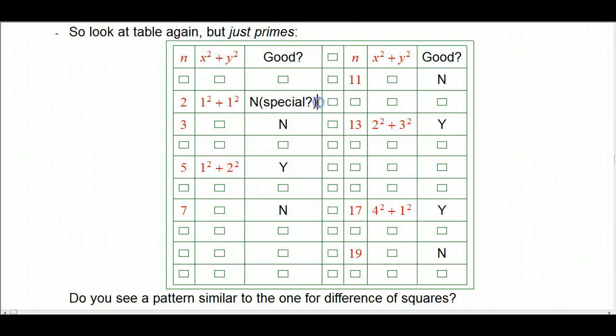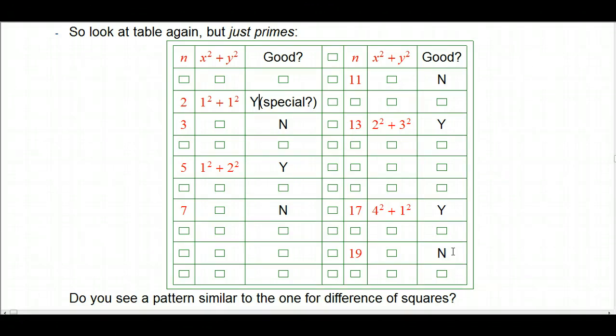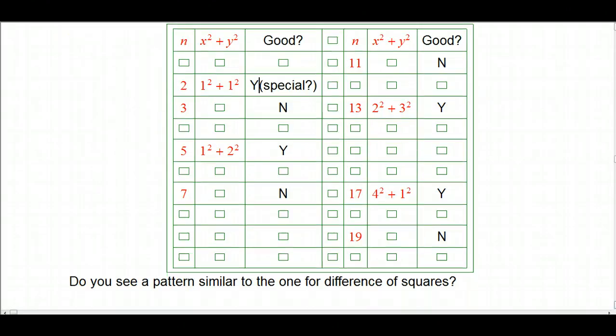It's going to be another really big payoff for looking at the primes. So now 2, we've already seen that's pretty special. And this might not be part of a pattern. It's the only even prime. And so it does factor. It's a yes, but it might be special. Now, 3 doesn't, 5 does, 7 doesn't, 11 doesn't, 13 does, 17 does, 19 doesn't. And you could go on. But you probably want to pause right now and ask yourself, do you see a pattern that's similar to the one that you found for the difference of squares? Pause the video, because I'm going to reveal.